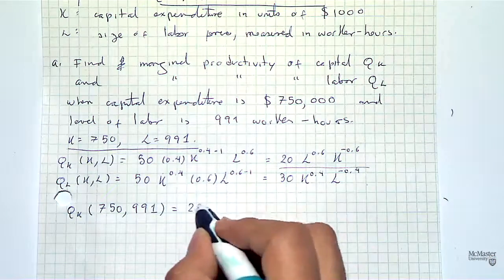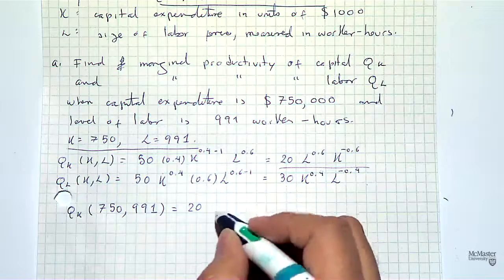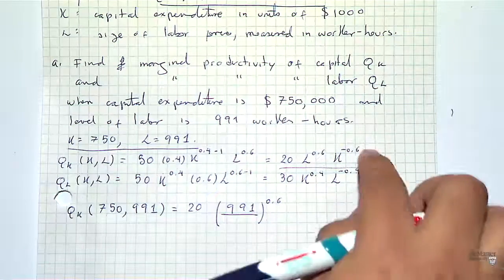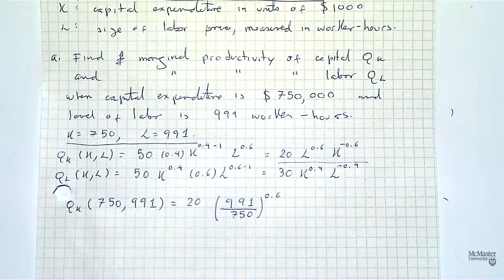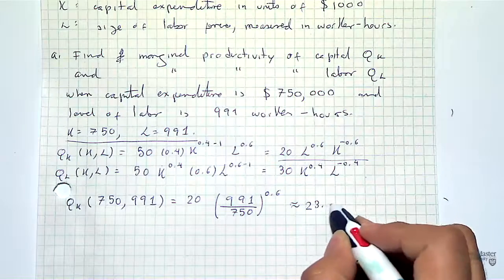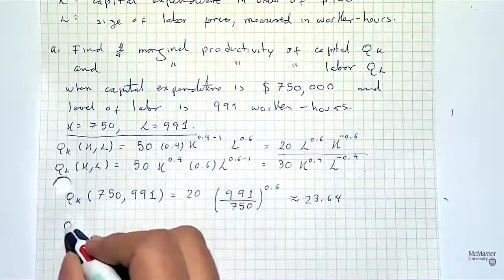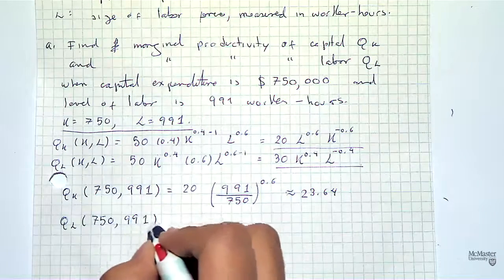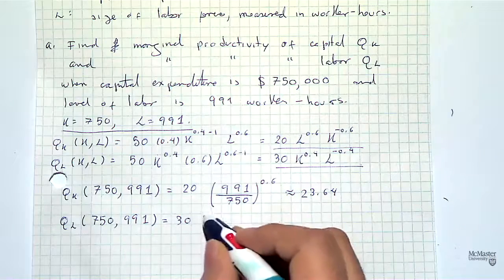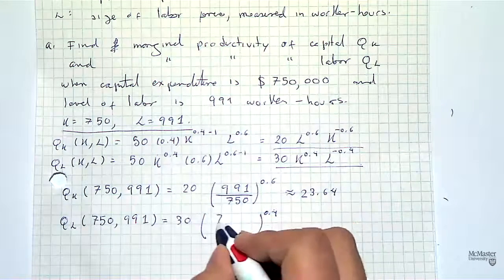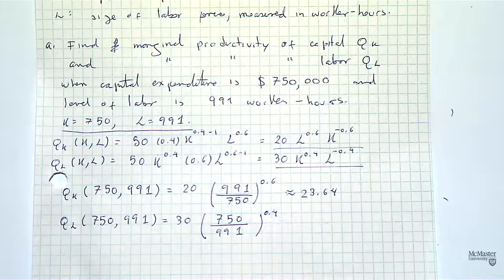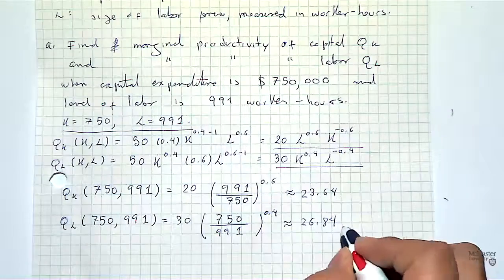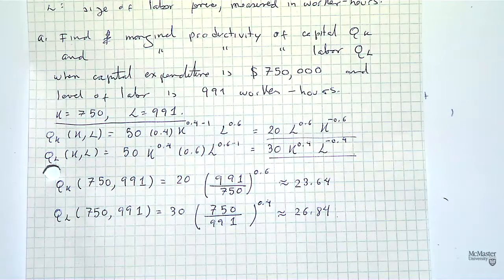Now we plug in K = 750 and L = 991. For the partial of Q with respect to K evaluated at those values, we have 20 times (991/750)^0.6, which gives approximately 23.64. For the partial of Q with respect to L, we have 30 times (750/991)^0.4, which gives approximately 26.84.